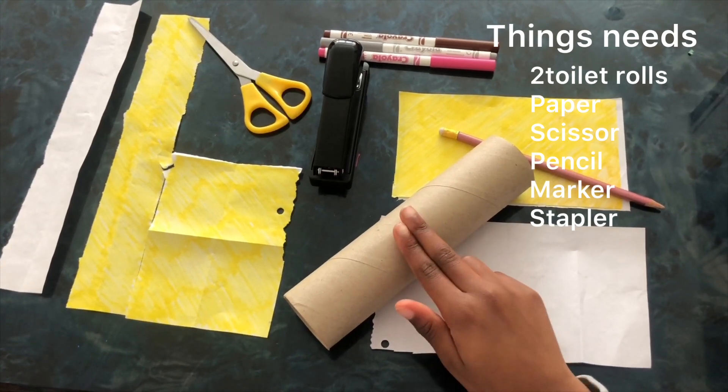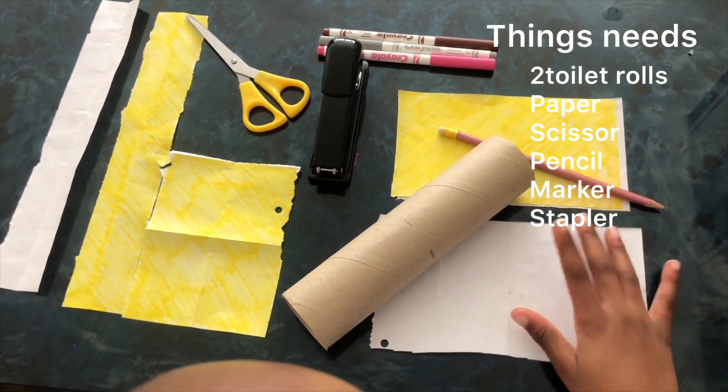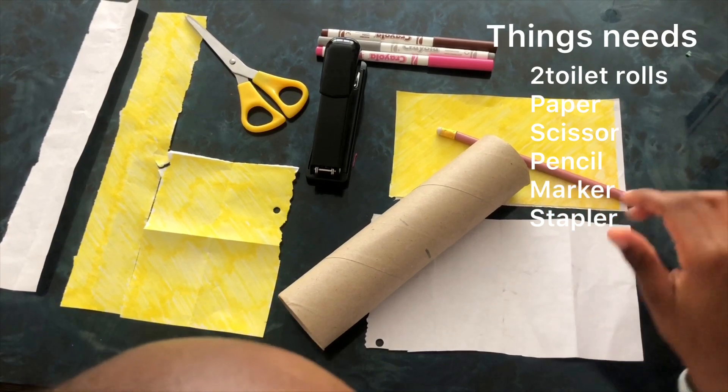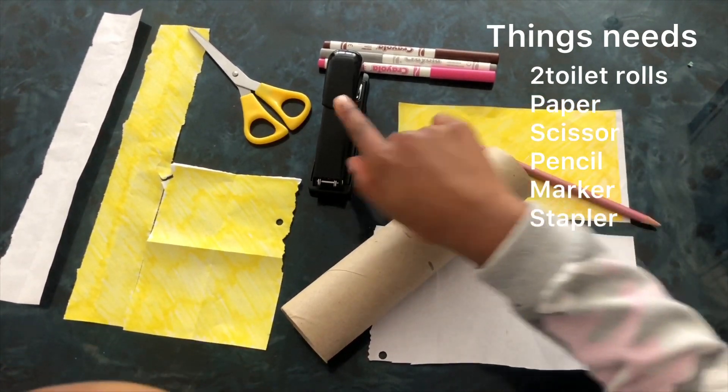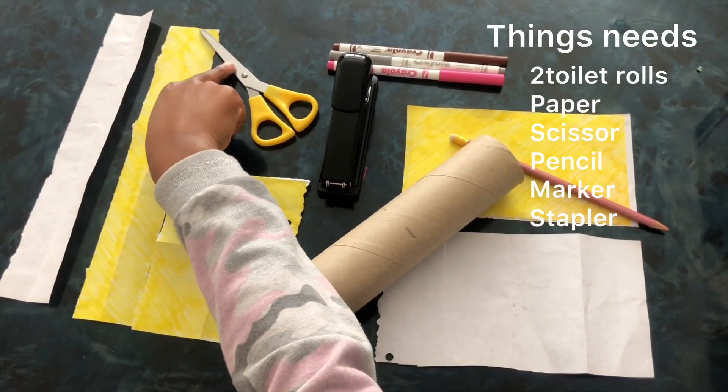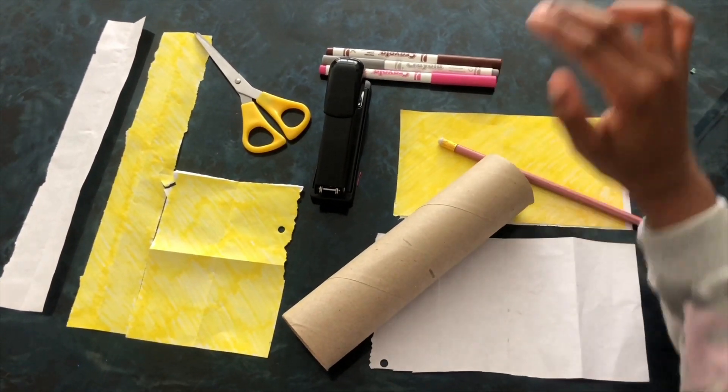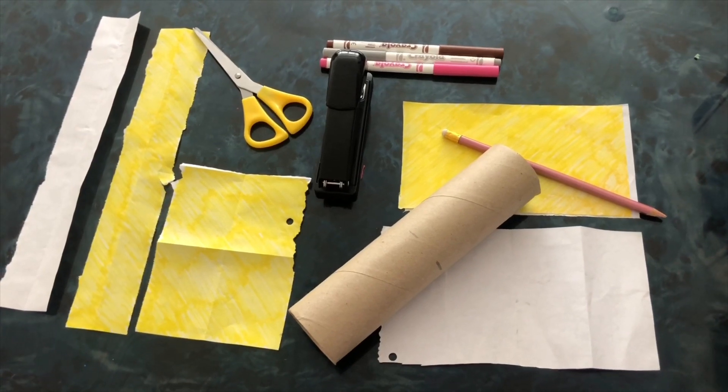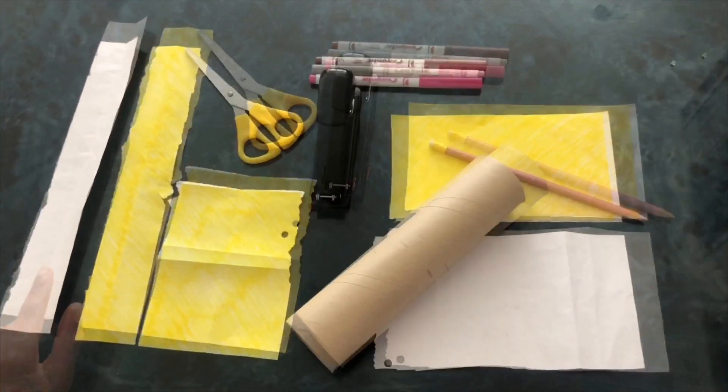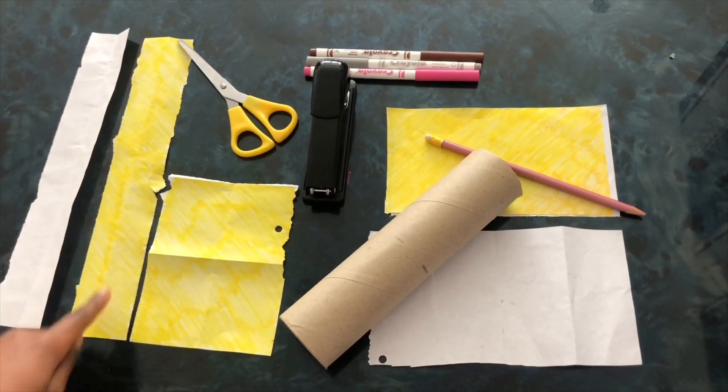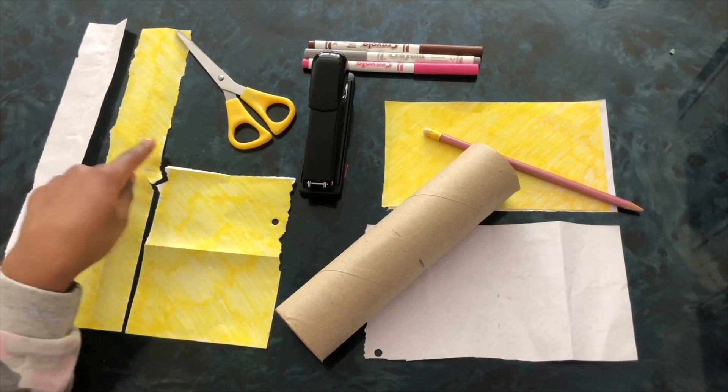These are the things we will need for this project. We will need a kitchen roll, paper yellow and white, pencil, a stapler, a pail, scissors and markers. And the measurements of these two pieces are eleven and a half inches down and two inches across.